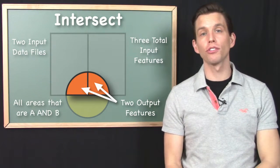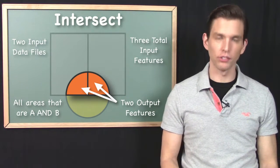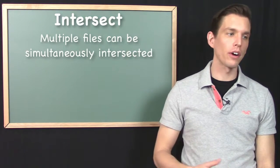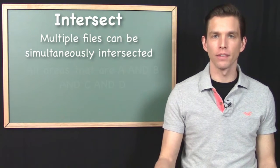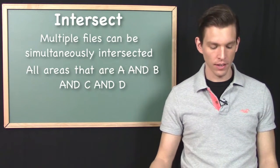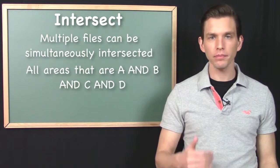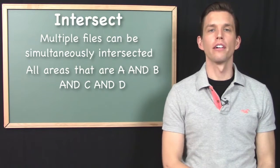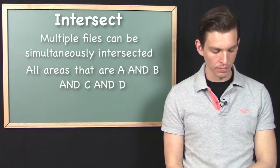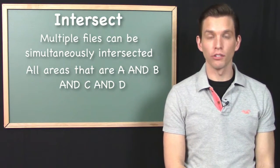Importantly, you can intersect more than two datasets at a single time. Intersect is extremely handy like this, and you can probably think of lots of situations where you need to know all areas that are A, and B, and C, and D. You can load all of those into an intersect operation and ask where all those areas overlap. You can handle multiple datasets in a single intersect operation.